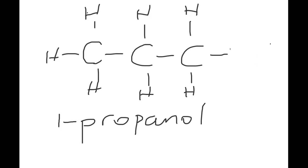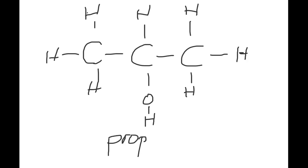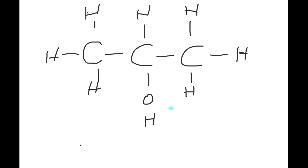To make the isomer, we move the functional group to the adjacent carbon — the second carbon — and the hydrogen now goes elsewhere. This is no longer propan-1-ol; the OH is on carbon two, so counting gives us the lowest number as two. This compound is propan-2-ol or 2-propanol.